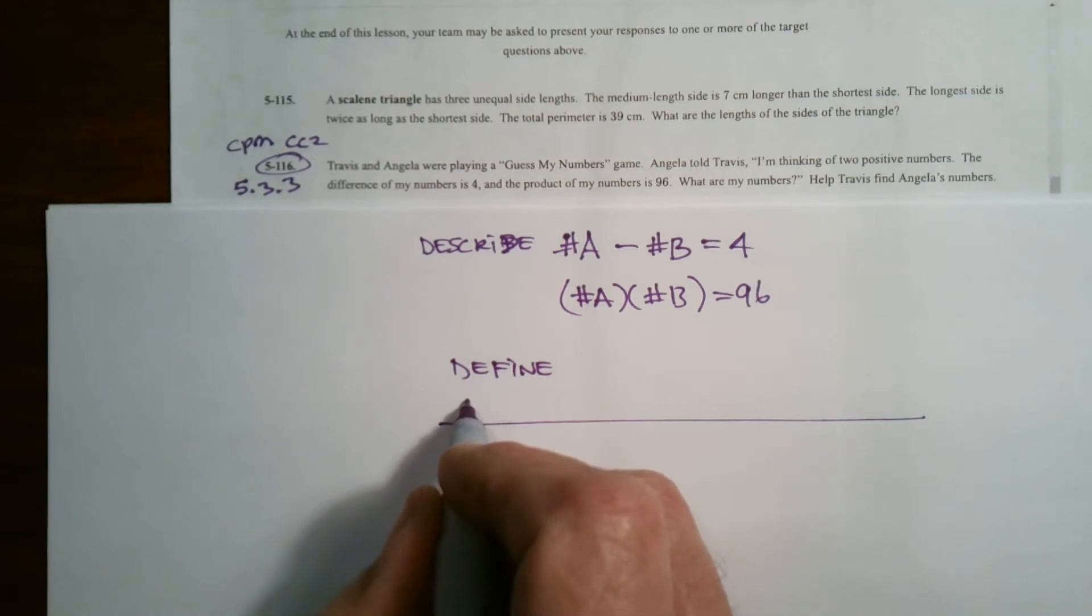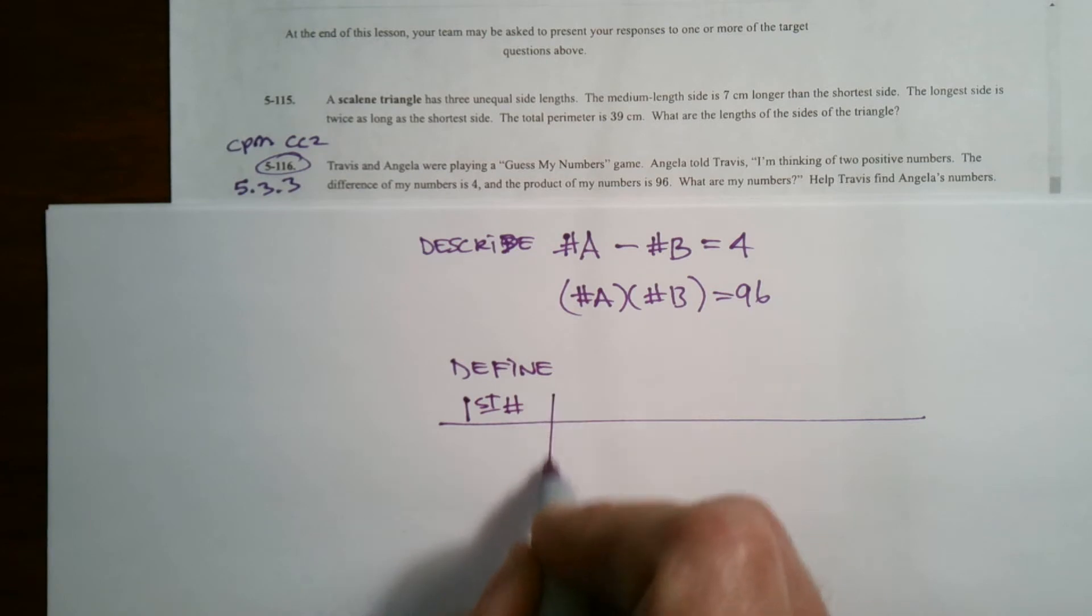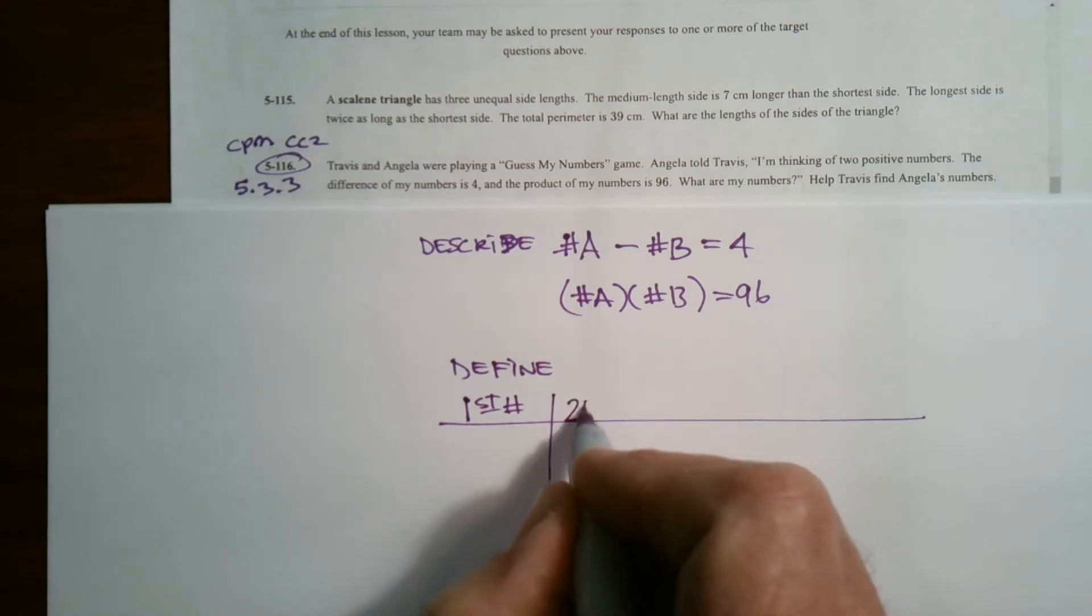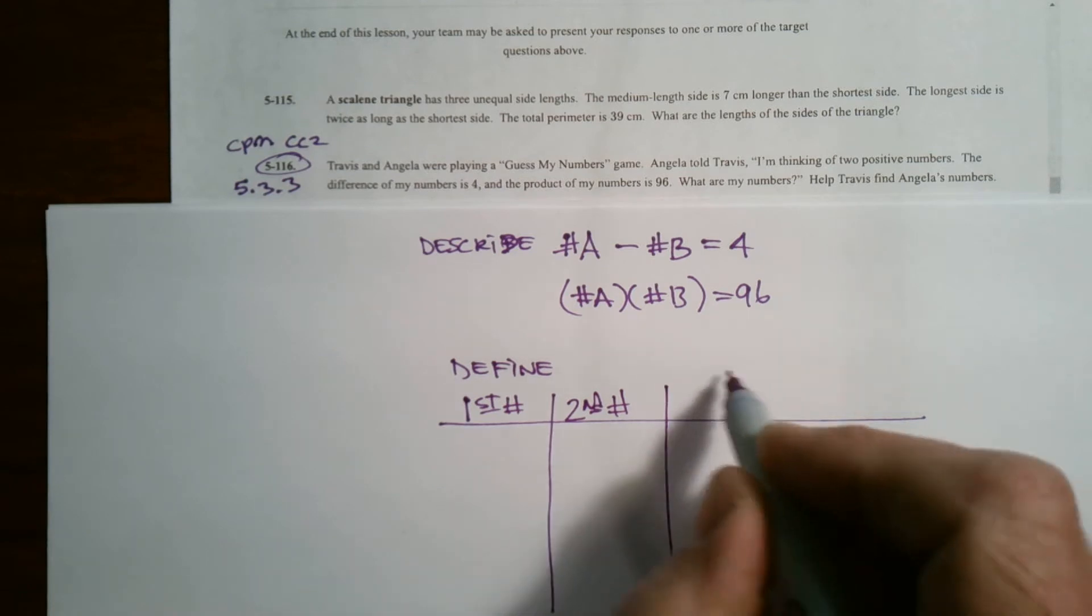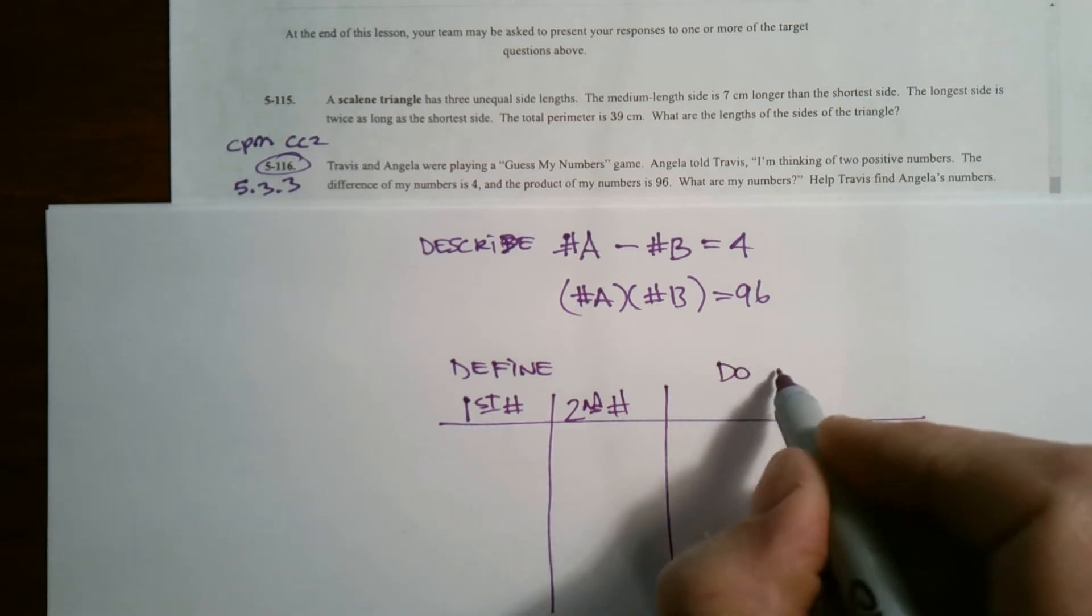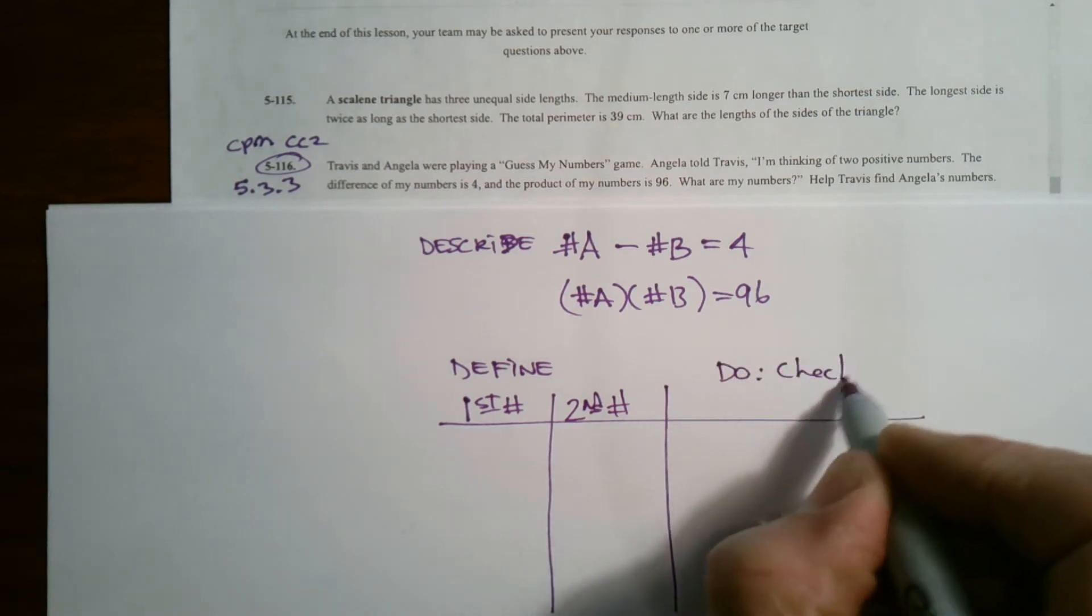Obviously, I'm going to be guessing on my first number. And then from that, I can come up with what my second number would be. And then once I have those two numbers, then I'm going to do the do part, which is the check. The do is the check part.